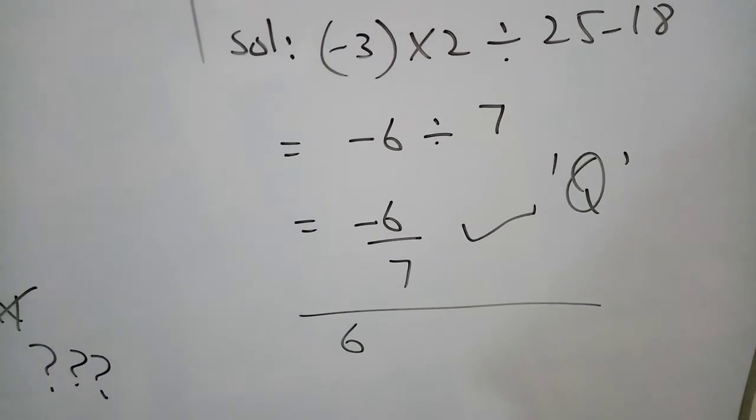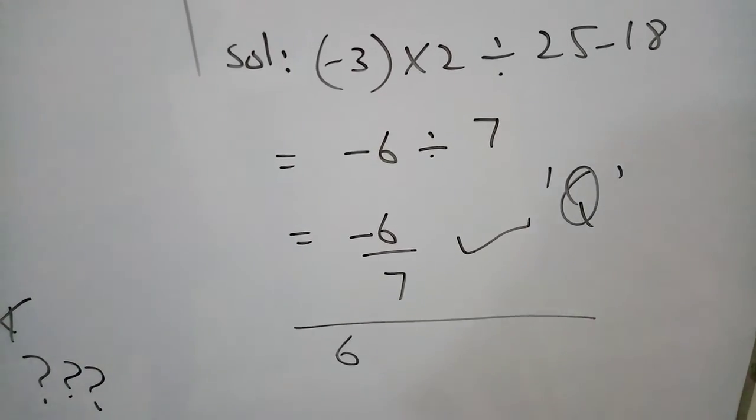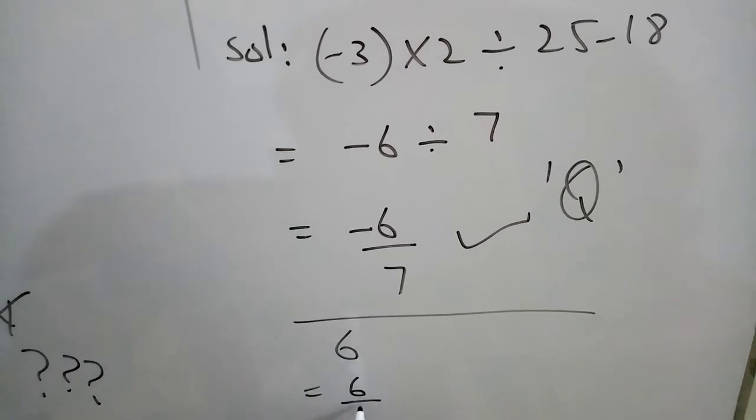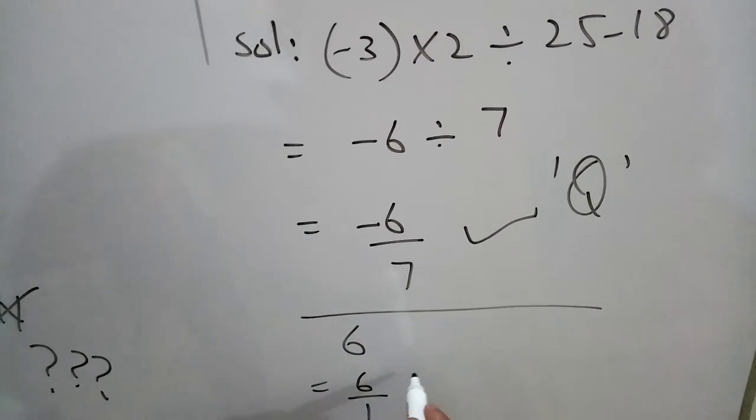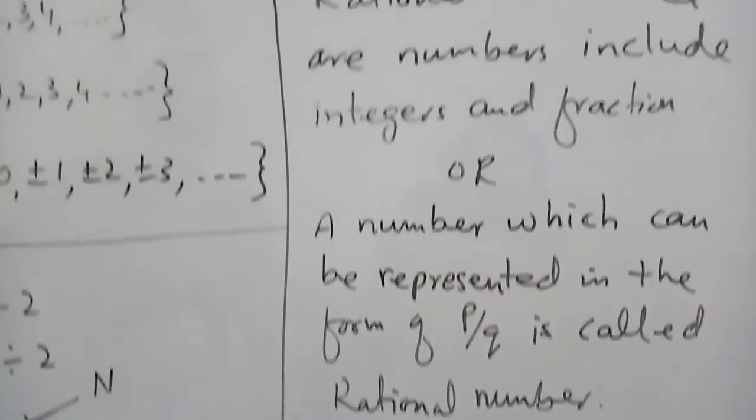There is one thing more. Tell me, is 6 a rational number? Yes, 6 is a rational number because it can be divided by 1, so it is also a rational number. That's all for today, thank you.